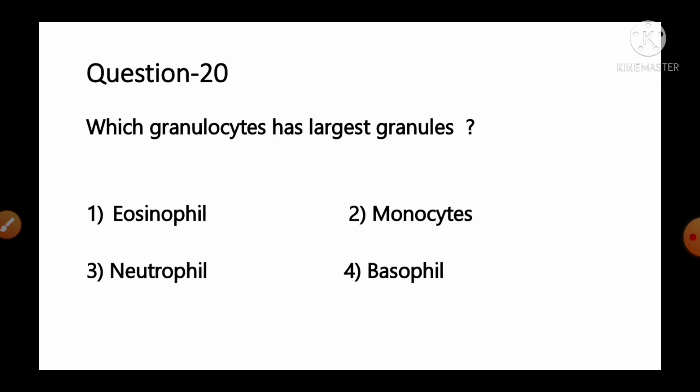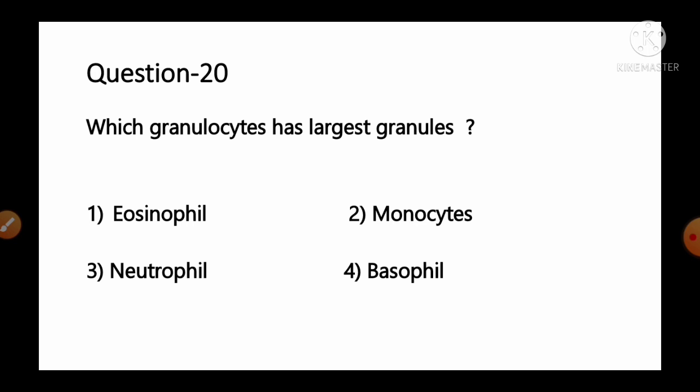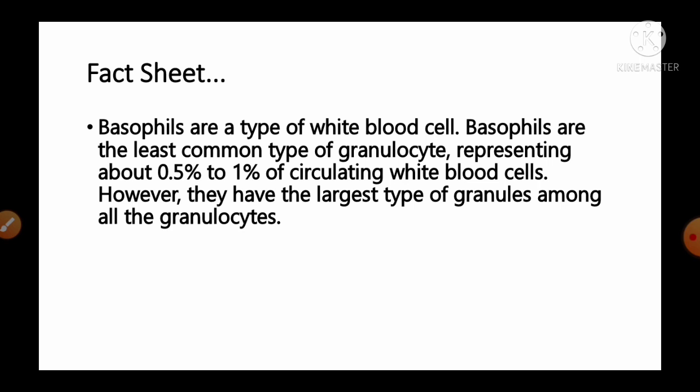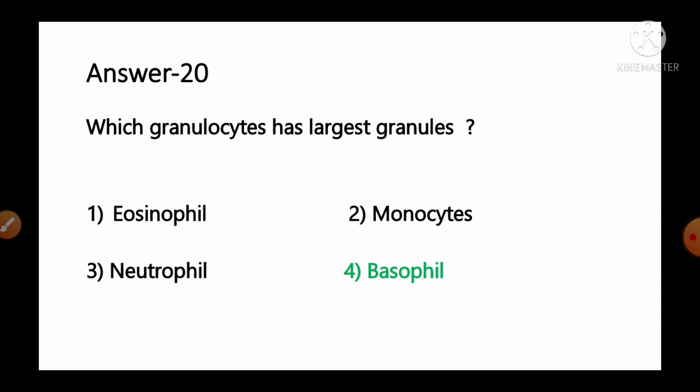Question number 20: Which granulocyte has the largest granules? Options: 1) eosinophil, 2) monocytes, 3) neutrophil, 4) basophils. Basophils are a type of white blood cell and the least common type of granulocyte, representing about 0.5–1% of circulating white blood cells. However, they have the largest type of granules among all granulocytes. So option number 4, basophils, is the correct answer.